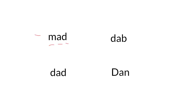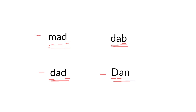D — mad. D-A-B — dab. D-A-D — dad. And D-A-N — Dan. Did you see the D in all these words? D, D, D. The last word starts with a capital D because it's a name — Dan is a name.